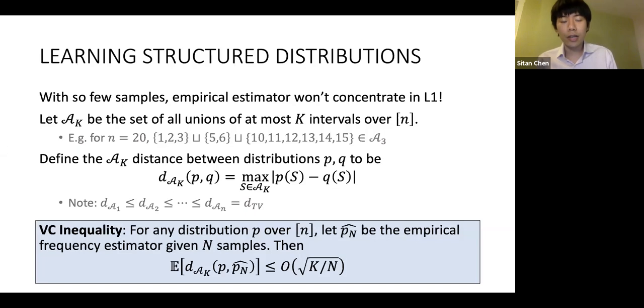The key fact, this is the VC inequality, says that if I want to just concentrate in A_k norm, then it suffices to take roughly k/ε² samples in order for the empirical estimator to be within A_k distance ε of the true distribution.